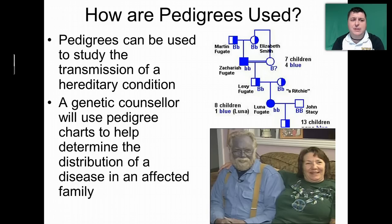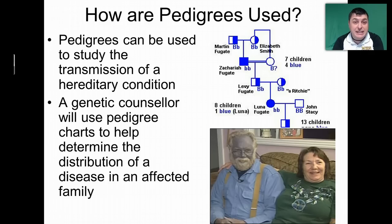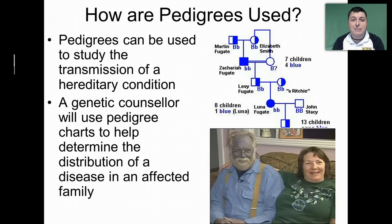Another way that pedigrees can be used is to show how a hereditary trait is passed from one generation to the next. This is especially useful if that hereditary trait happens to be a disease that causes a major problem. A genetic counselor can use the pedigree chart to figure out the distribution of that trait and come up with the probability of it being passed down in the next generation.